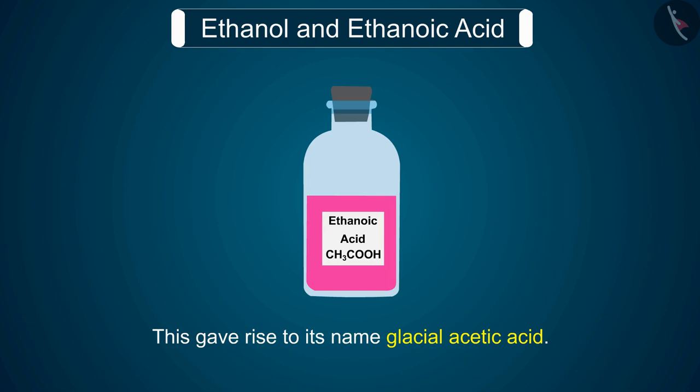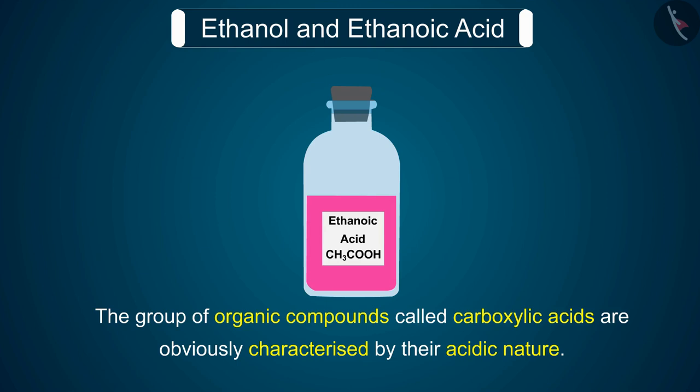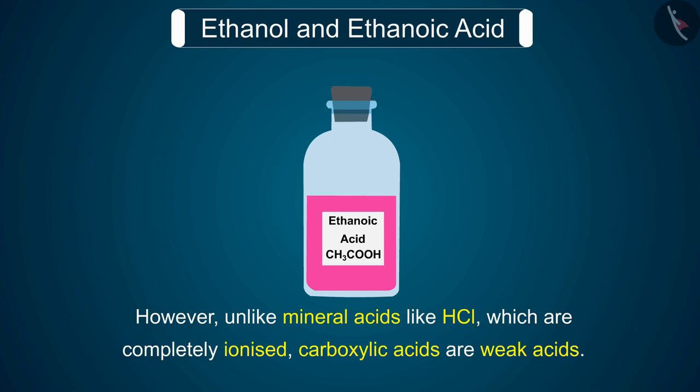This gives rise to its name glacial acetic acid. The group of organic compounds called carboxylic acids are obviously characterized by their acidic nature. However, unlike mineral acids like HCl, which are completely ionized, carboxylic acids are weak acids.